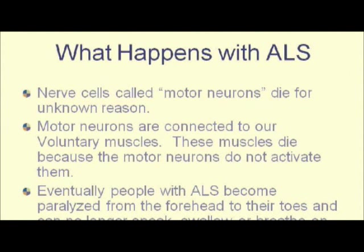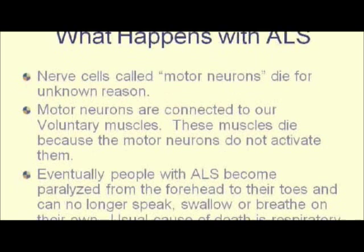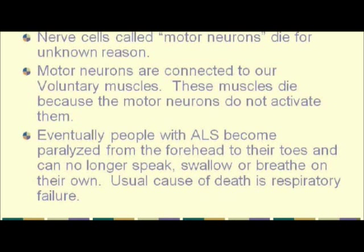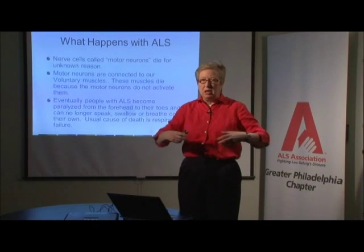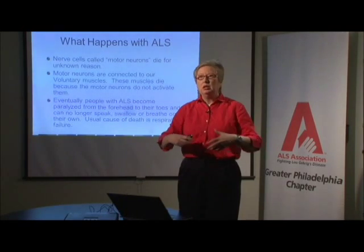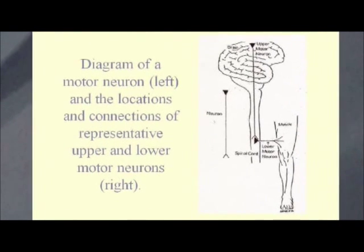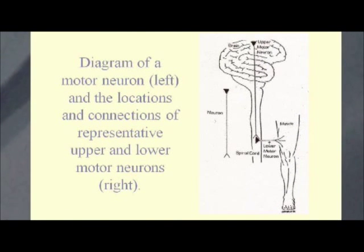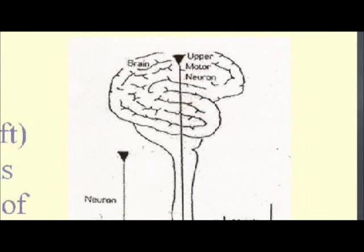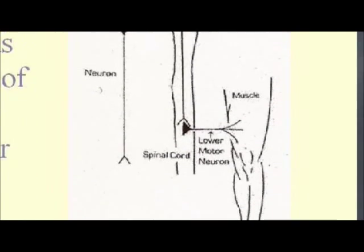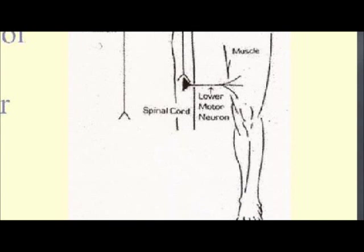So the motor nerves die, and then the muscle that they're connected to dies. Eventually people become paralyzed from the top of their head all the way down to their toes. The usual cause of death is respiratory failure because the diaphragm and the other muscles we use to breathe no longer work. This is a diagram of where the motor nerve starts in the frontal section of the brain, shoots the signal into the spine, and from there the nerves go out to all of the various muscles.